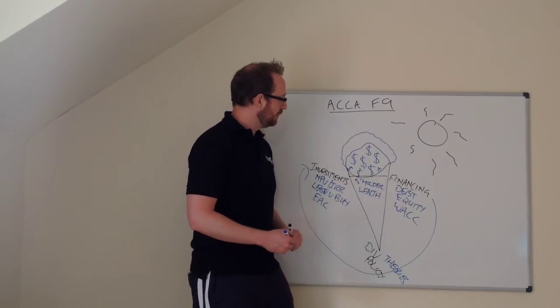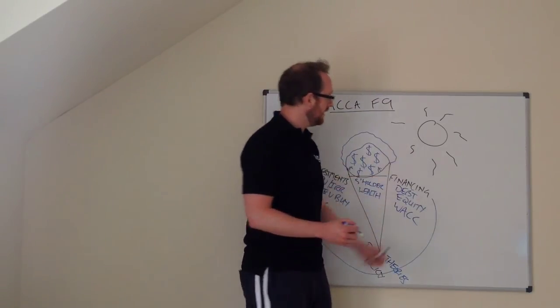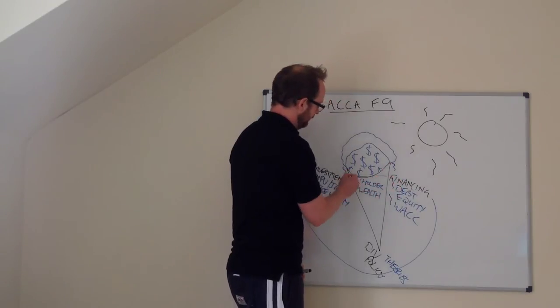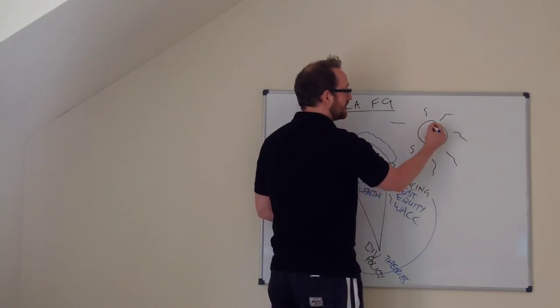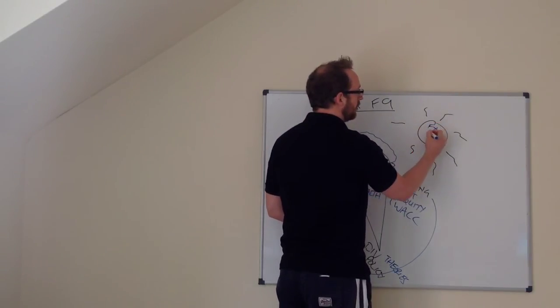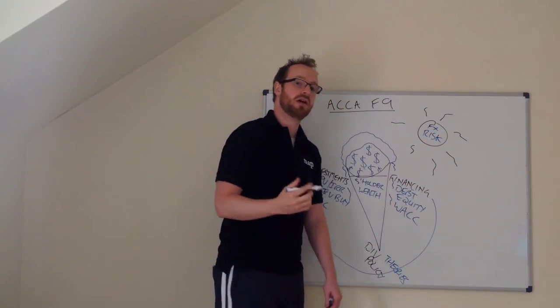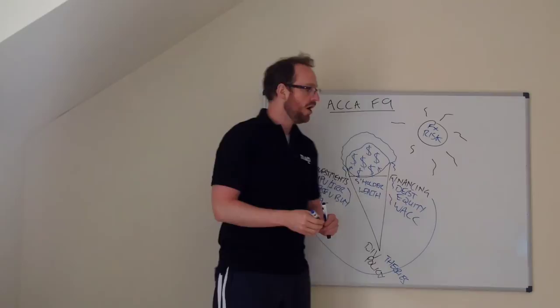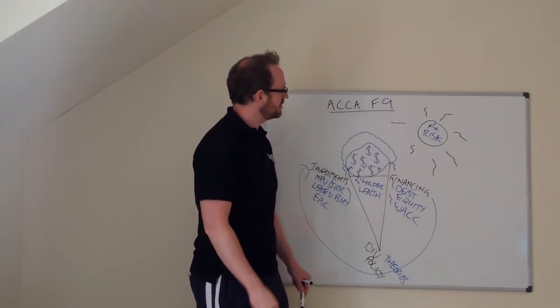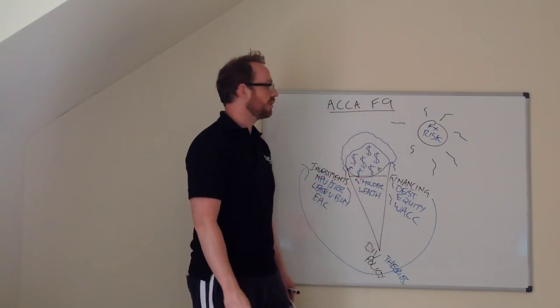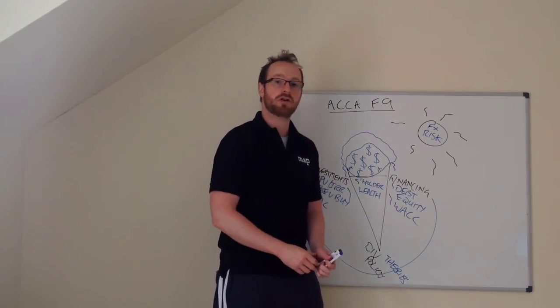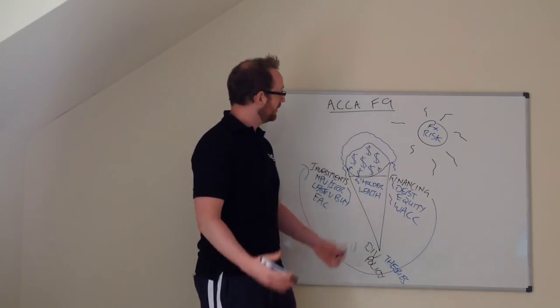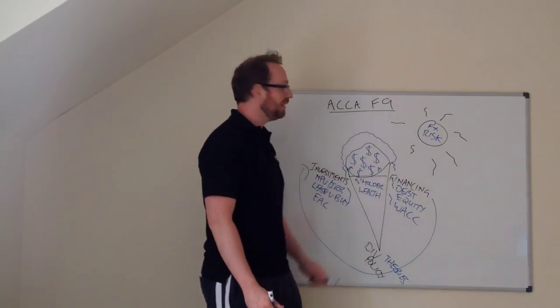Now of course the problem with ice cream on a sunny day is that the ice cream can melt so that would reduce shareholder wealth and one of the main reasons will be this sun and up here we'll call this foreign exchange risk because that's something else that we look at on the F9 syllabus. How that foreign exchange risk and interest rate risk can reduce your ice cream, can reduce that shareholder wealth that we're trying to create.